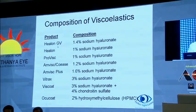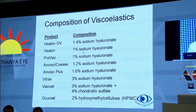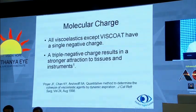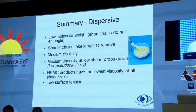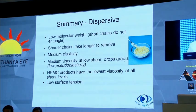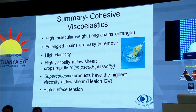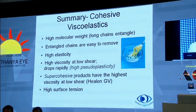Healon-GV is 1.4% sodium hyaluronate, Healon is 1%, and Viscoat is 3% sodium hyaluronate combined with 4% chondroitin sulfate. Chondroitin sulfate has the property to adhere and stick to the endothelium. All viscoelastics except Viscoat have a single negative charge; Viscoat has a triple negative charge. In summary, dispersives have low molecular weight, short chains that do not entangle, and take longer to remove. Cohesives have high molecular weight, entangled chains that are easy to remove as a blob, high elasticity, and high viscosity at low shear rates. Super-cohesive products like Healon-GV have the highest viscosity at low shear rates and high surface tension.